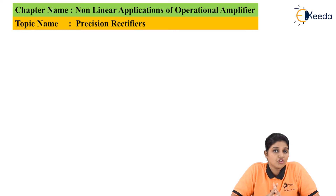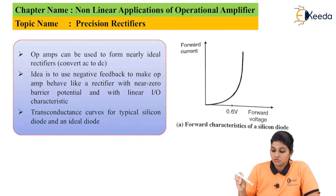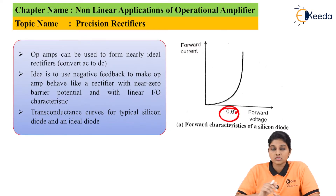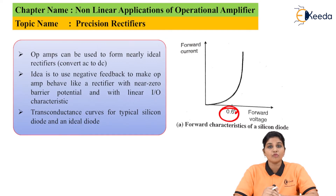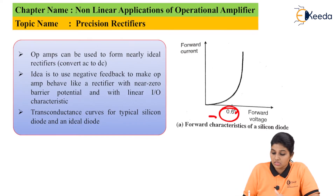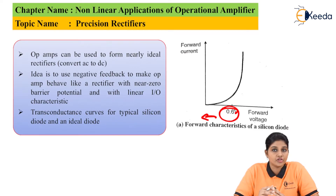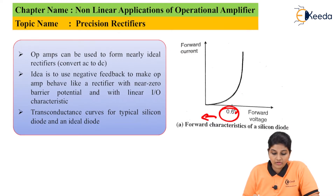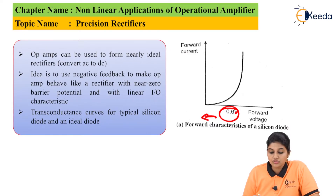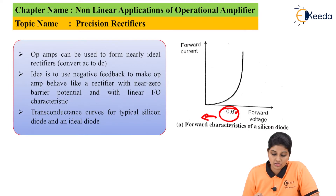Let's understand this by using the transfer characteristics of the diode. Looking at the forward characteristics of the silicon diode, 0.6V is the cutoff voltage of the diode. If the voltage is below 0.6V it is not possible for the diode rectifier to rectify it. Such low voltages are rectified by using a precision rectifier. An op-amp can be used to form an ideal rectifier for converting AC signal into DC signal. The idea is to use negative feedback to make the op-amp behave like a rectifier with non-zero barrier potential and with linear I/O characteristics.